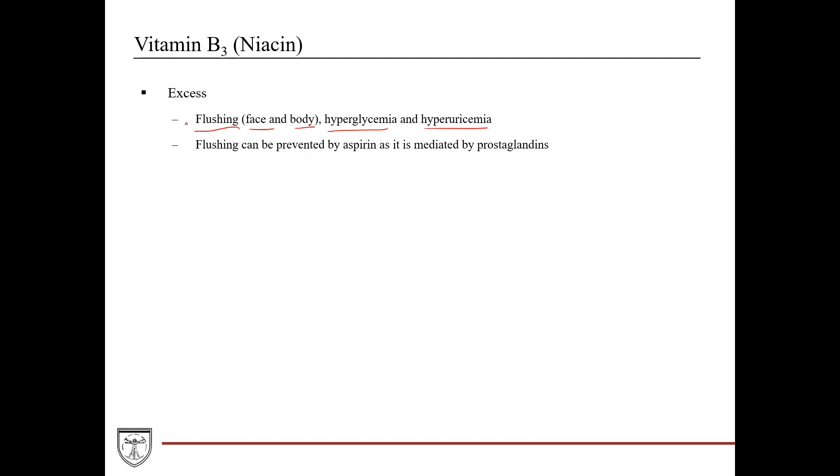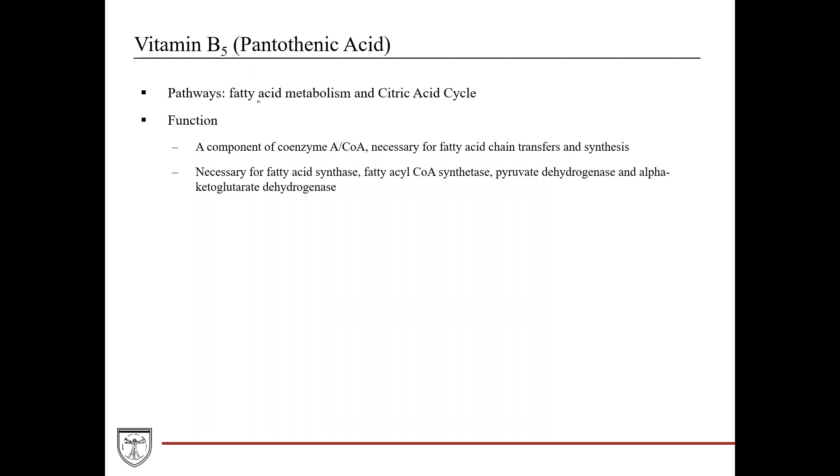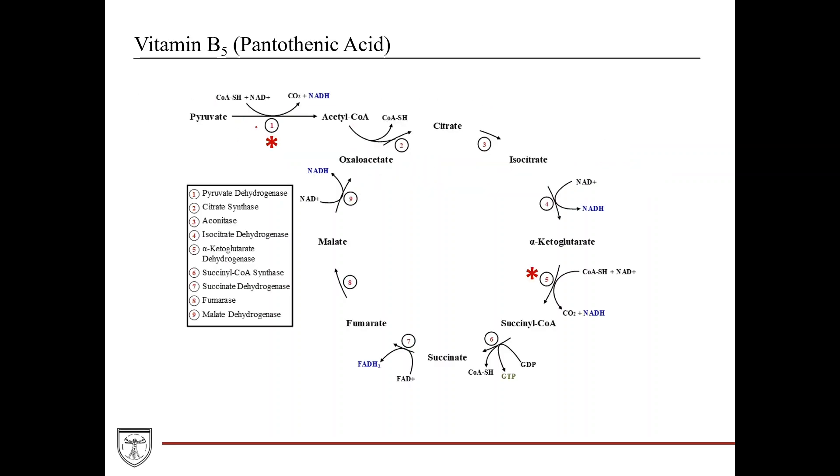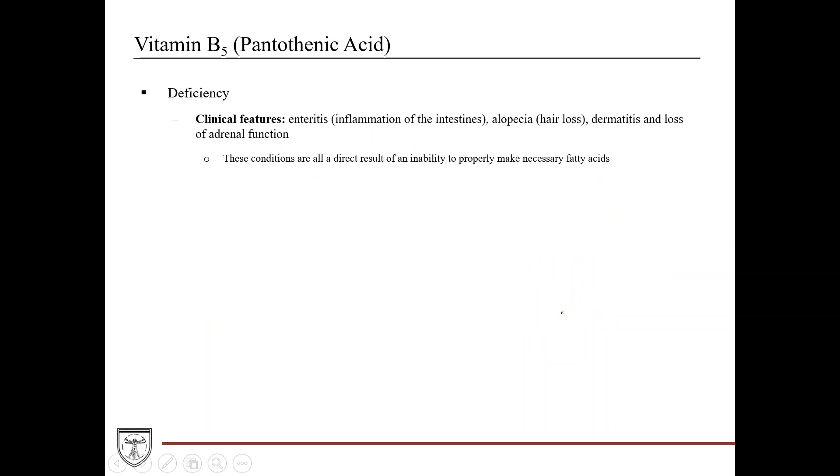Vitamin B5, also known as pantothenic acid, is primarily used in fatty acid metabolism and by a couple reactions in the citric acid cycle. It's a major component of coenzyme A or CoA, making it very necessary for fatty acid transfers and synthesis. It's used by fatty acid synthase and fatty acyl-CoA synthetase. In the citric acid cycle, like vitamin B1, it's used by pyruvate dehydrogenase in the conversion of pyruvate to acetyl-CoA, and by alpha-ketoglutarate dehydrogenase in the conversion of alpha-ketoglutarate to succinyl-CoA. Deficiency results in enteritis, alopecia, dermatitis, and loss of adrenal function, all direct results of the inability to properly make the necessary fatty acids.